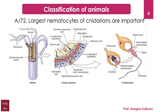Cnidarians are the simplest organisms with tissue grade of organization — the next level after cellular organization. Their cells come together to form tissues, and their bodies are made up of two layers of cells. The outer layer is called the epidermis and the inner layer is called the gastrodermis. In between these two layers there is a jelly-like structure called mesoglia, consisting of scattered cells and collagen fibers, connecting both layers. This is why we call them diploblastic organisms.